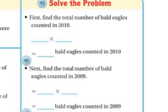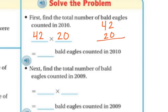First, I'm going to find the total number of bald eagles counted in 2010. There were 42 in 20 locations, so 42 times 20. That's two tens times 42, so I put my zero there for the two tens. Two times two is four, and two times four is eight. So I get 840 bald eagles counted in 2010.